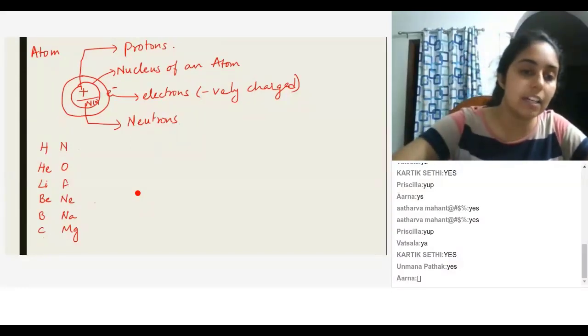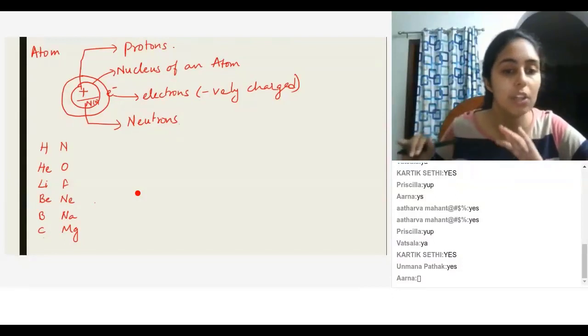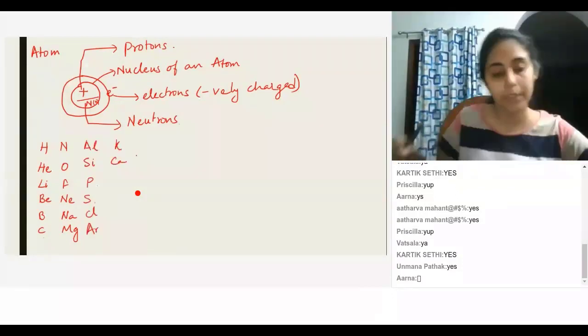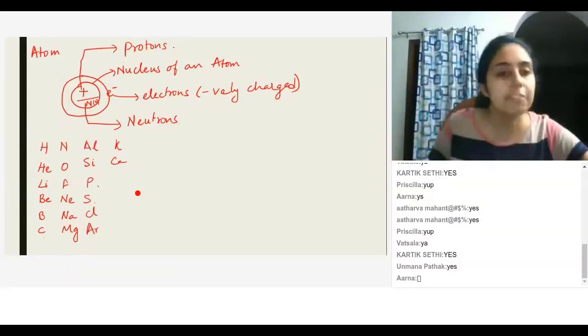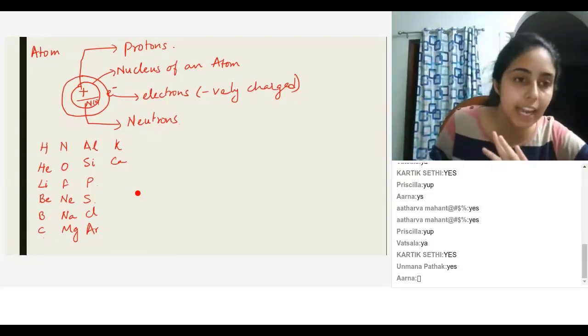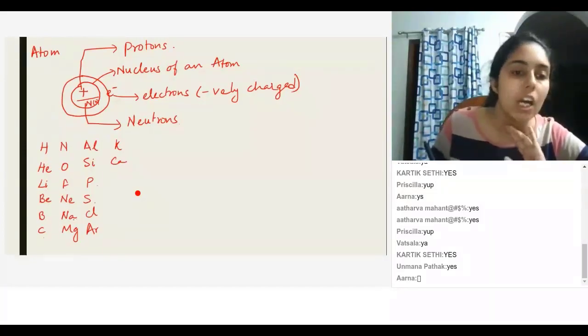Is there anyone who knows all the 20 elements of the periodic table? So these are the first 20 elements of the periodic table. Let me just read them out to you: hydrogen, helium, lithium, beryllium, boron, carbon, nitrogen, oxygen, fluorine, neon, sodium, magnesium, aluminum, silicon, phosphorus, sulfur, chlorine, argon, potassium, and calcium.